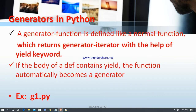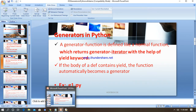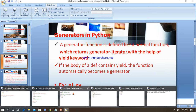So what are generators? A generator function is defined like a normal function which returns a generator iterator with the help of the yield keyword. Whenever the function comes to the yield keyword, that is considered as a generator concept. Also, if the body of the definition contains yield, the function automatically becomes a generator.